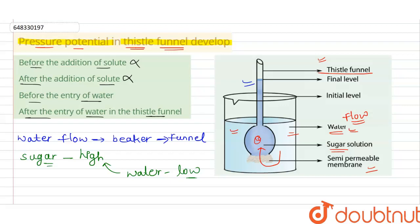Normally we take pure water in the beaker, so there is no solute concentration in the beaker. But when this water enters the thistle cell funnel, a concentration gradient is created — water concentration is low and sugar concentration is obviously high. Slowly the water concentration increases until the overall solution in the thistle cell funnel reaches equilibrium.